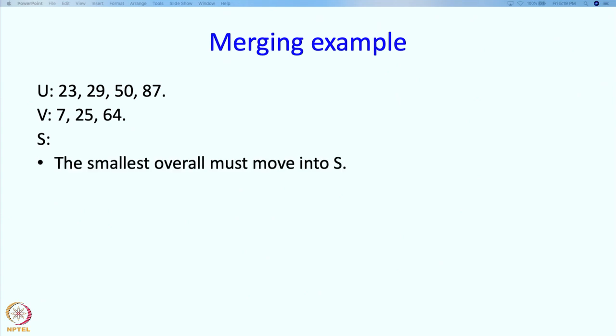If you think about it, what do we want in S? The first element should be the overall smallest. Now how do we get the overall smallest? We need to look at both these sequences in great detail. Well, no. Because they are sorted, it is the smaller of the smallest which is present in the first position and the smallest over here which is also present in the first position.